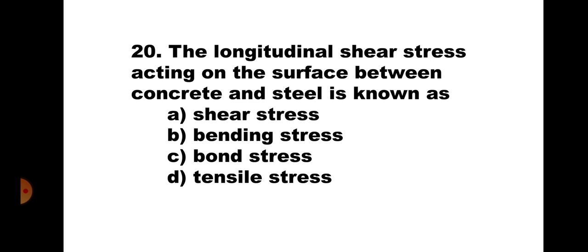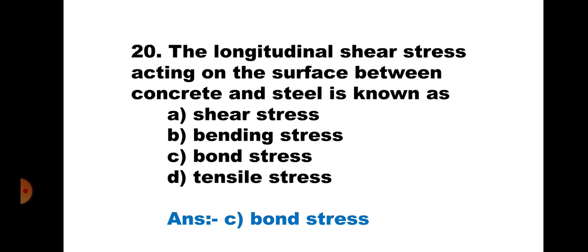Question 20. The longitudinal shear stress acting on the surface between concrete and steel is known as: A. Shear stress, B. Bending stress, C. Bond stress, and D. Tensile stress. This is the definition of bond stress — the longitudinal shear stress acting on the surface between concrete and steel. Hence, the correct answer is C. Bond stress.